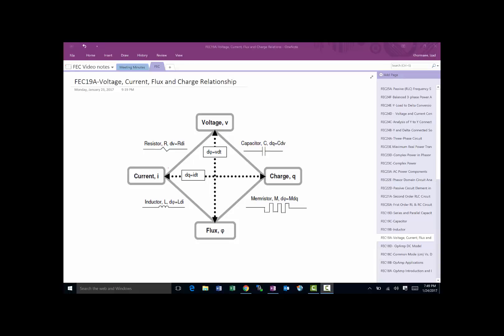Our objective here is to talk about the relationship between voltage, current, charge, and flux. Let's start talking about the relationship between voltage and flux, and current and charge. Voltage can be written as the derivative of flux.